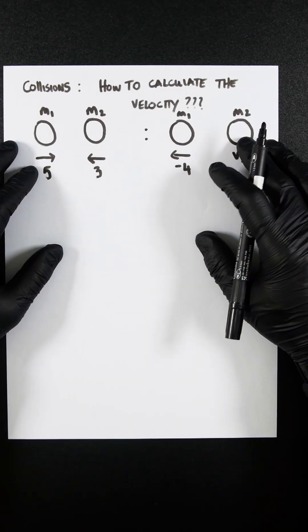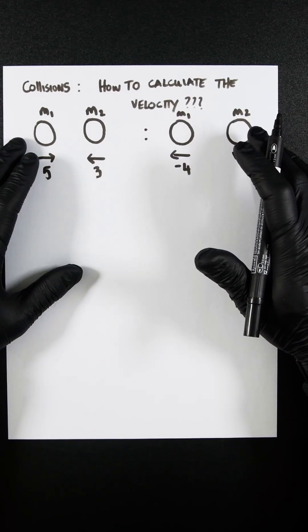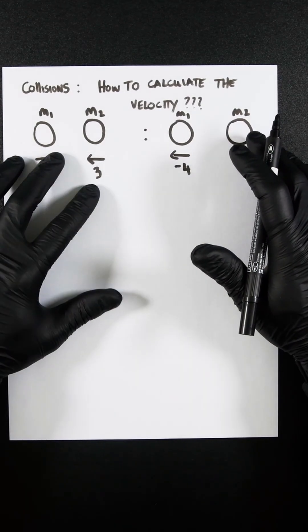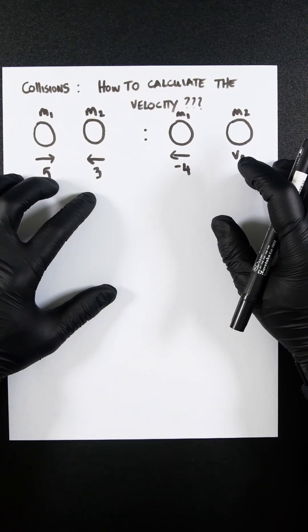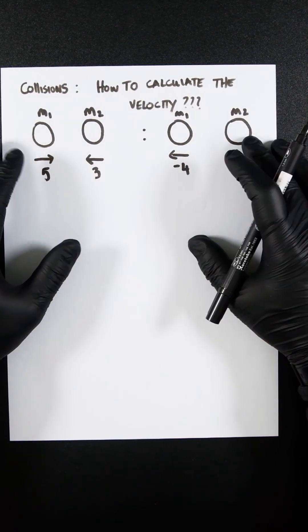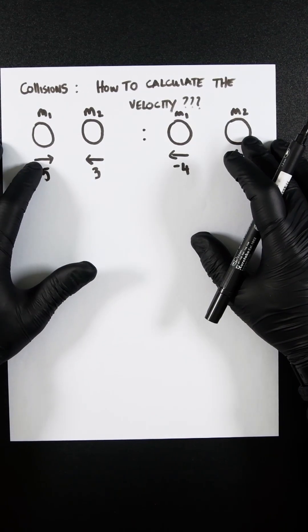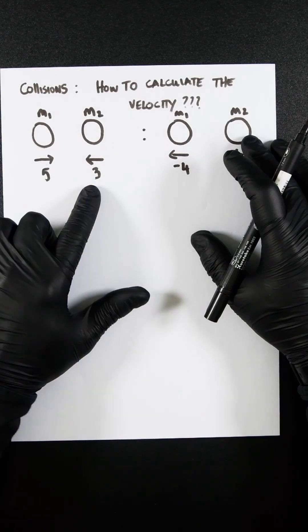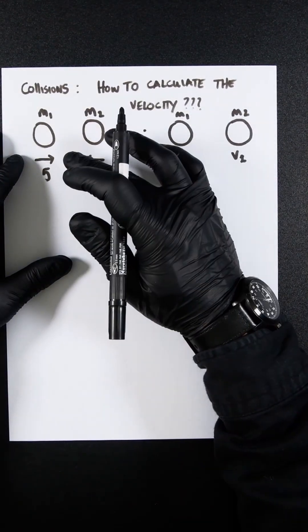This is a simple problem in mechanics where two particles have collided. They were going at specific velocities before, and afterwards they're going in different velocities. Velocities have a direction, so this particle is going at 5 meters per second towards this one, and this is going 3 meters per second in the other direction.